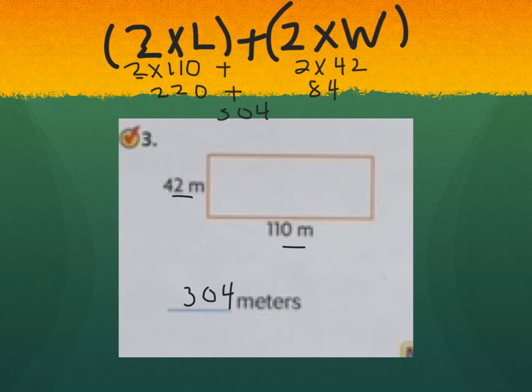So 100 plus 100 is 200, and 10 and 10 is 20. Or I can do 110 plus 110. Okay, we get the same answer. And I did the same for 42. Okay, 40 and 40 is 80, and 2 and 2 is 4, or 84. And then I added 220 plus 84. And I got 304 meters.